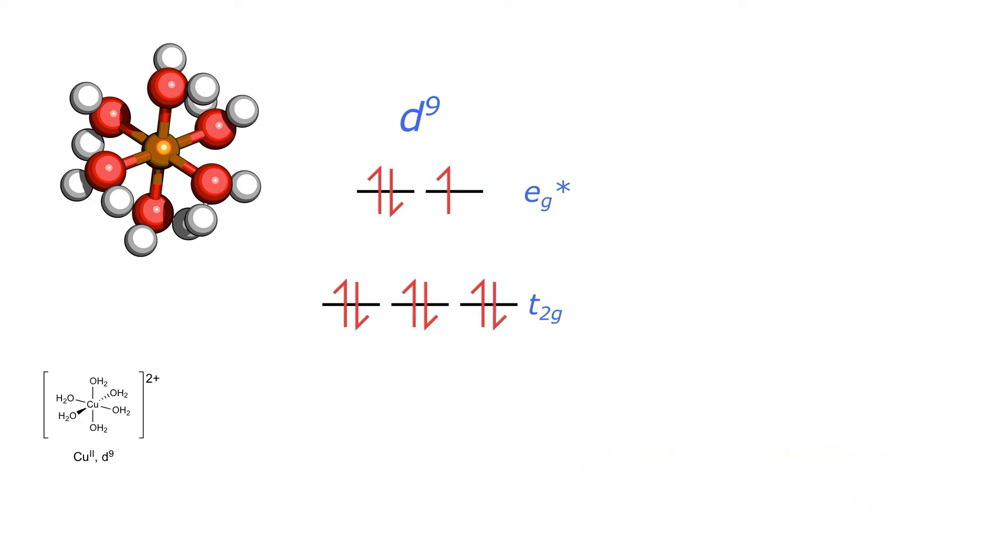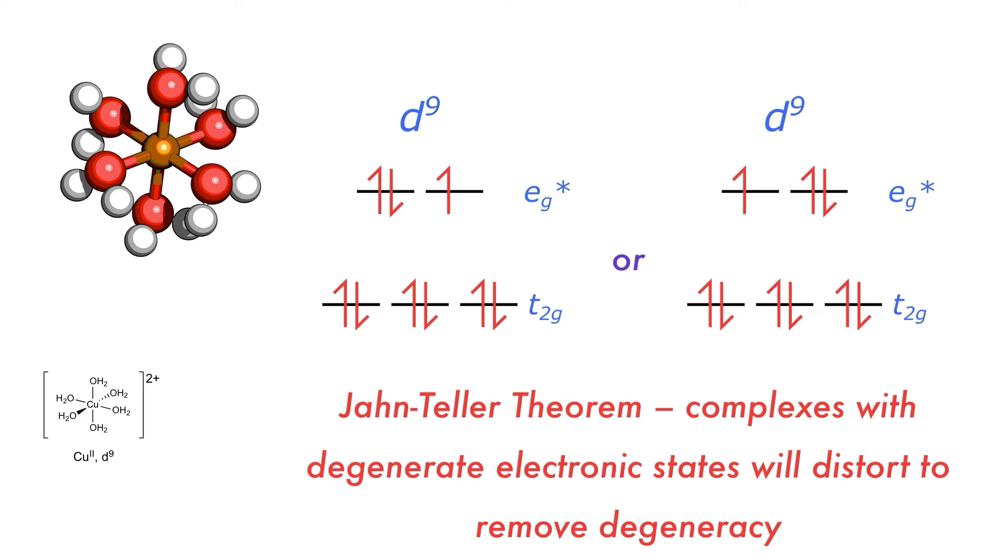The split in the absorption spectrum is the origin of the Jahn-Teller distortion effect which states that complexes with degenerate electronic states will distort to remove degeneracy. For our complex, this means that for the eg set in the octahedral complex, we have three electrons which can be placed into these orbitals in two ways, which is a degeneracy. Nature often moves to break degeneracy, which brings about the Jahn-Teller theorem and how it works.